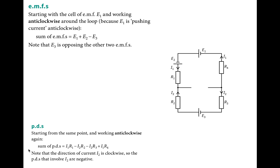I2 is clockwise, so all components using I2 to define their voltage carry a negative sign. Equating the two equations — since the sum of EMFs equals the sum of potential differences — we get: E1 plus E2 minus E3 equals I1R1 minus I2R2 minus I2R3 plus I1R4. This is how you form equations when there are opposing currents and different power sources.